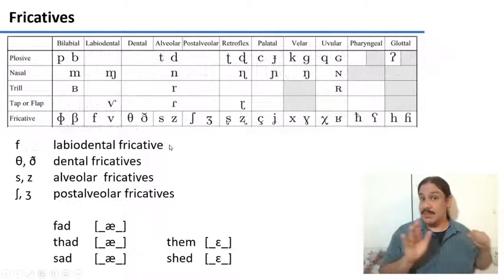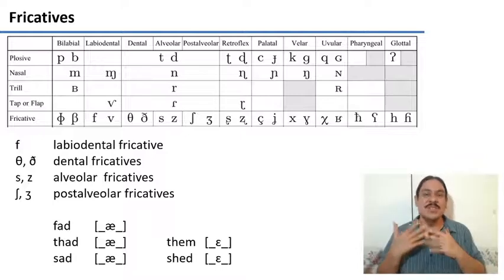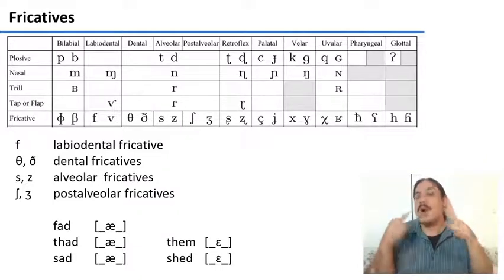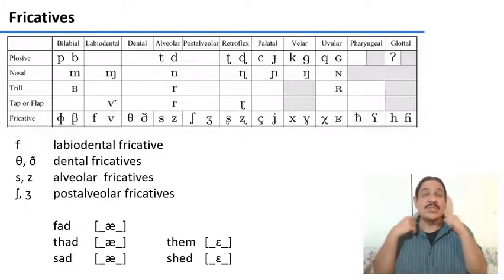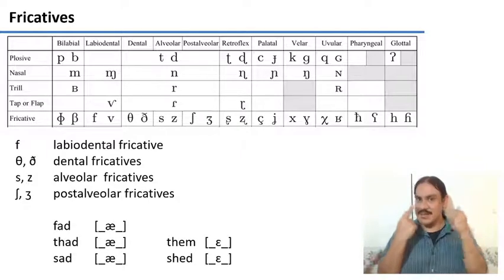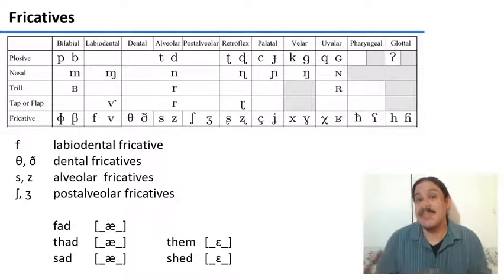So we have stops. Our next manner of articulation is fricatives. Fricatives, as you might suppose, involve friction. Your tongue is positioned in a certain way in which the air can rush out partially. And as it rushes out, it encounters the obstacle of your tongue and then turbulence is created. This turbulence leaves your mouth in the form of noise, basically.